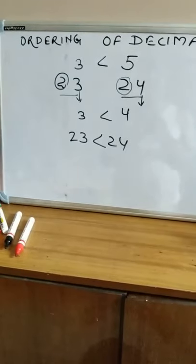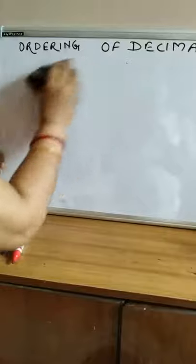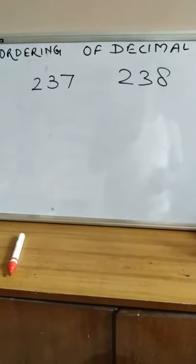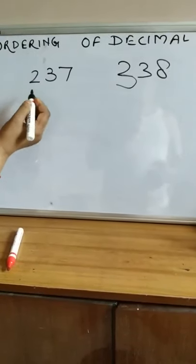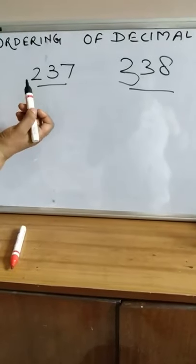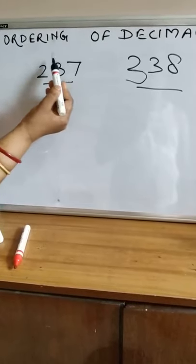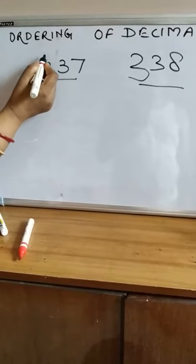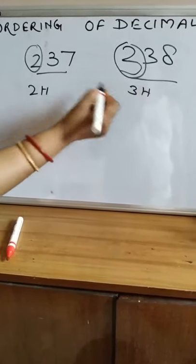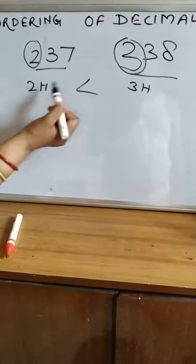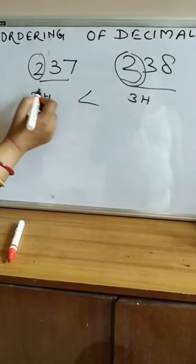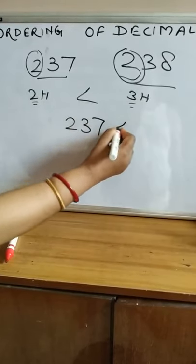Similarly, in the case of a 3-digit number, for example 237 and 338: both are 3-digit numbers. We start from the greatest place value, which is the hundreds place. Here it is 2 hundreds and there it is 3 hundreds. Which one is more? 300 is more. When the greatest place value digit differs, we can immediately decide — there is no need to move towards the right. So 237 is less than 338.